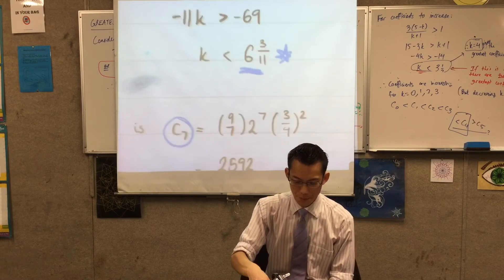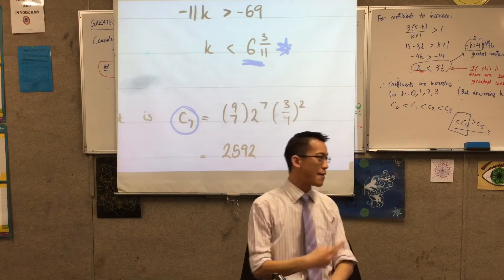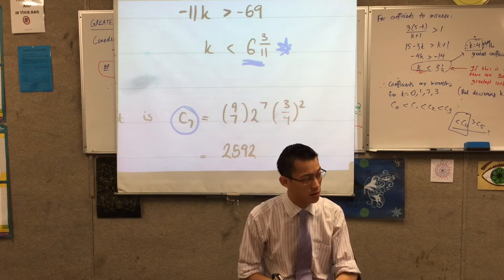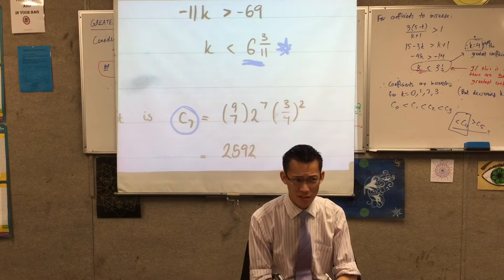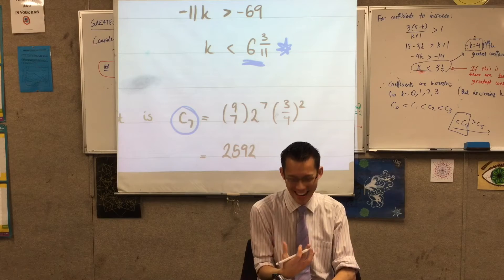You're like I've got an inequality, I've solved it. K must be an integer so the biggest value that is the solution to that is six and then you go ahead and go term seven? Like that's weird, that's a bit strange right?